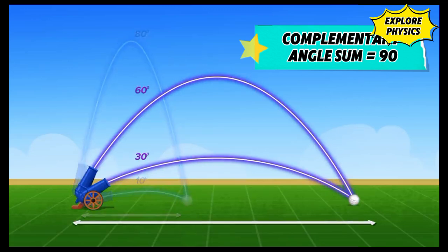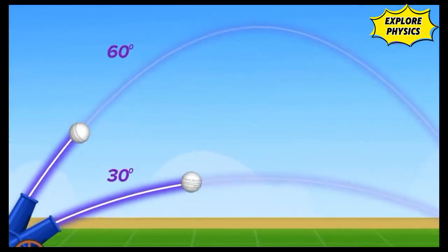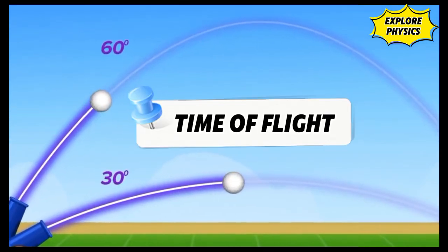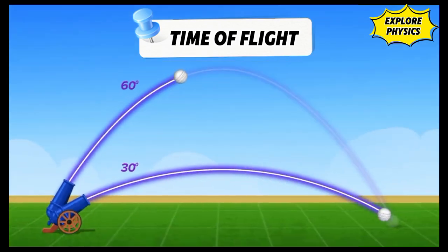So if the range is identical, then what is the difference between these throws? Another physics concept involved is the time of flight. The flatter throw with a smaller angle lands first as compared to the one with a higher angle or a more loopy throw, which stays in the air longer.